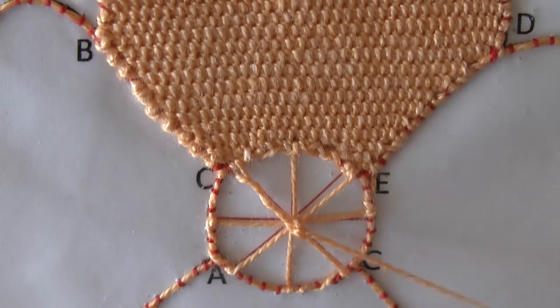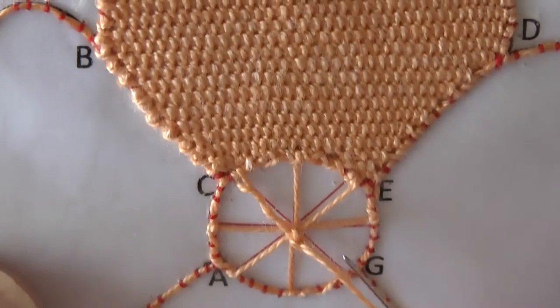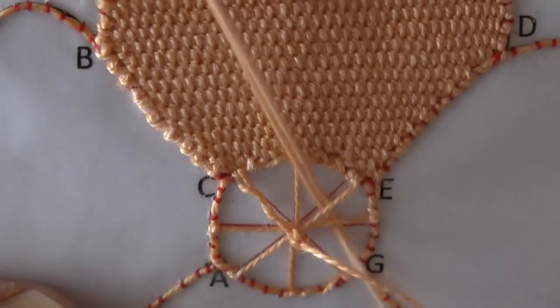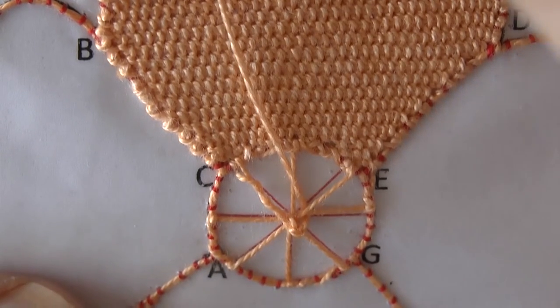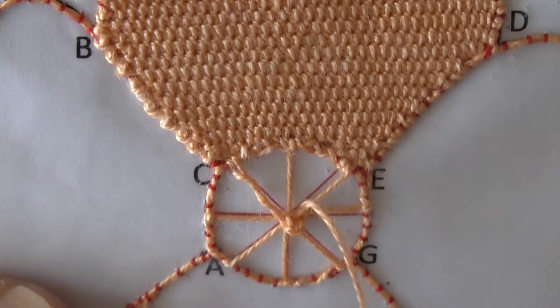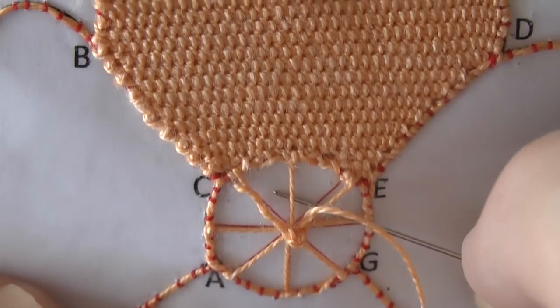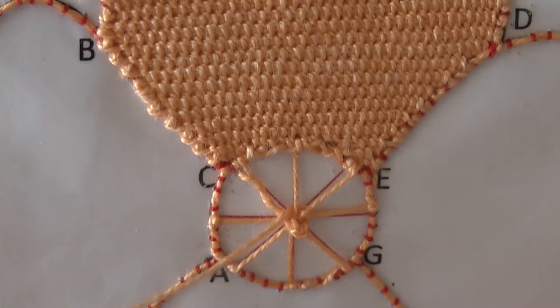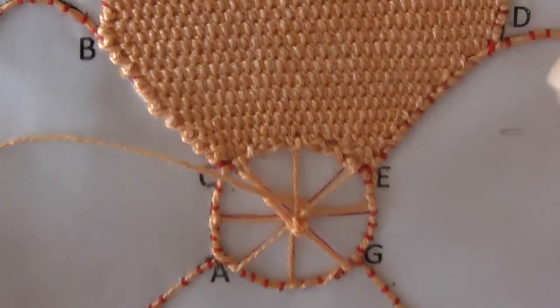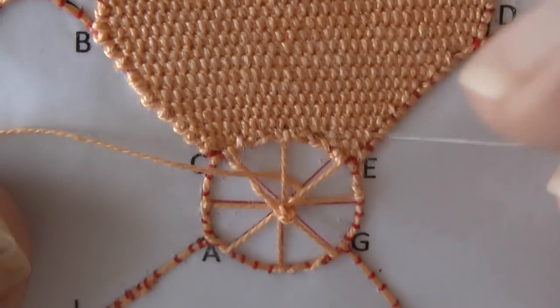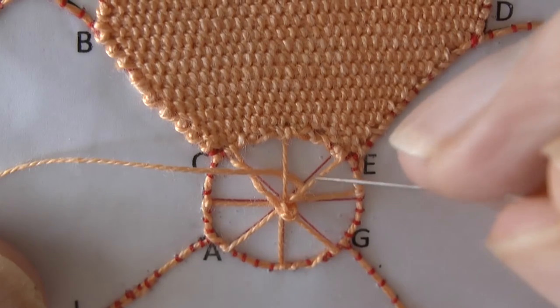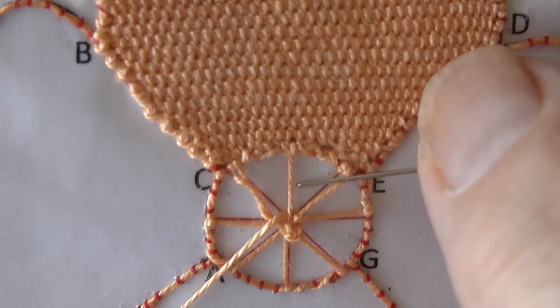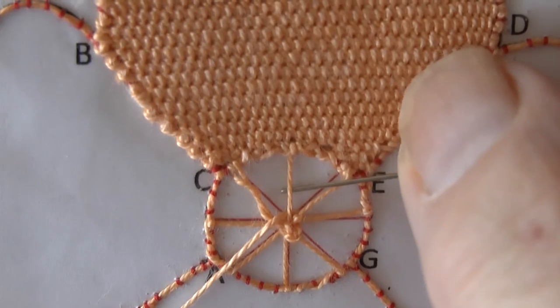As you come over that one spoke, you're now going to go under two spokes. Back one and under two. You've gone under this one and under that one, push the thread into the center, and then go under this last one that you came under, go under that one and the next one.